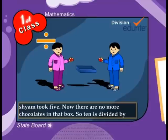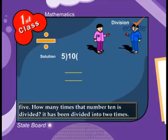Now, there are no more chocolates in that box. So, 10 is divided by 5.